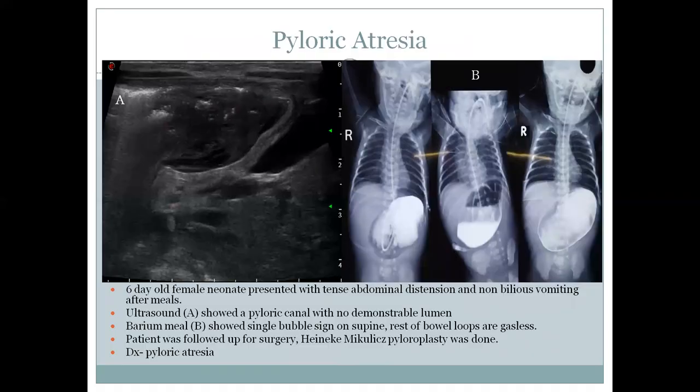The second case is a 6-day-old female patient with tense abdominal distension and non-bilious vomiting. Ultrasound showed a non-demonstrable pylorus, barium meal showed a single bubble sign and gaseous abdomen, and the patient was diagnosed with pyloric atresia.